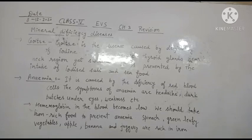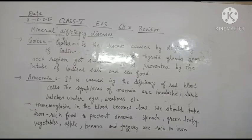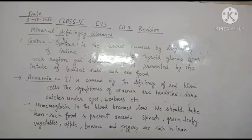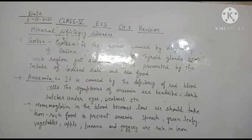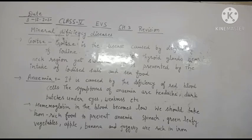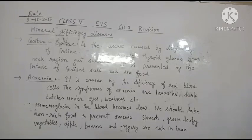Goiter can be prevented by the intake of iodized salt and seafood. We should use iodized salt — salt that has iodine added to it. Seafood is also a good source of iodine.